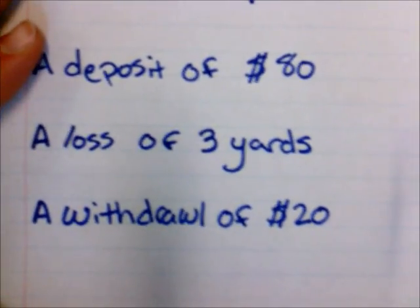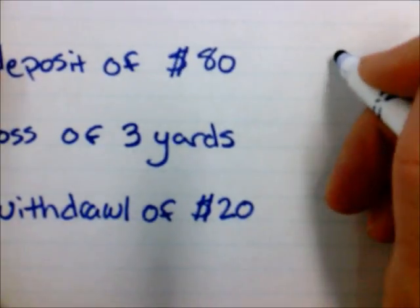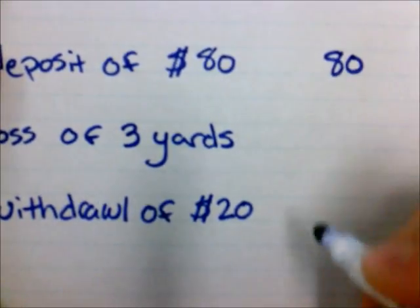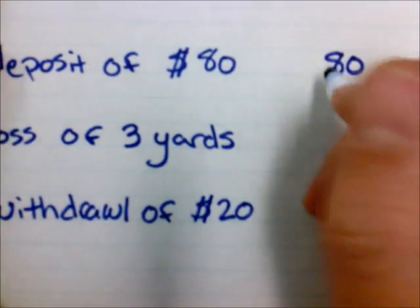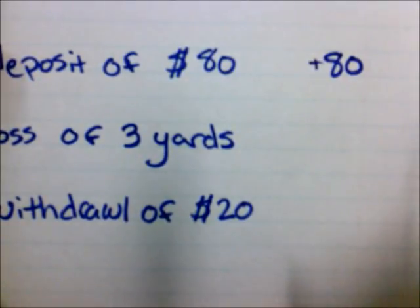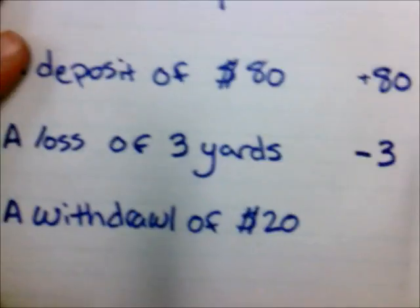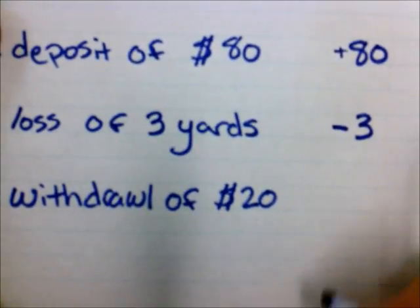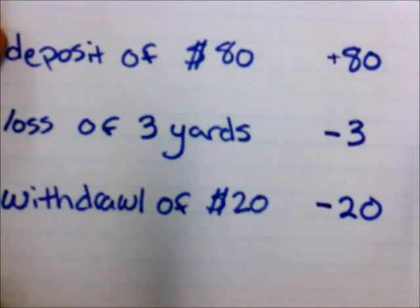Actually writing integers is going to give me a problem like this. For the first one, a deposit of $80 — we just learned that a deposit is a positive number, so my answer is just 80. Positive numbers don't need a sign because we assume it's positive. A loss of three yards is going to be negative three. And then a withdrawal of $20 is going to be negative 20. That's all writing integers is — just writing the number with the sign if it's needed.